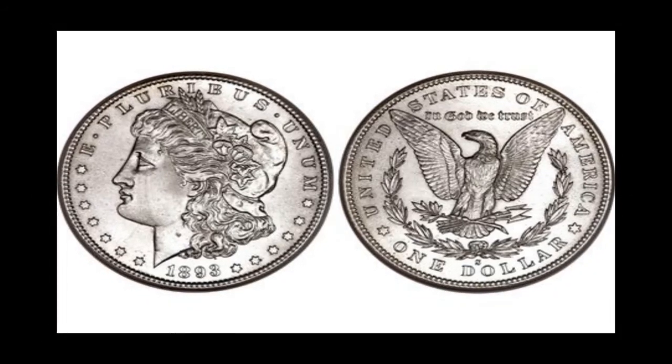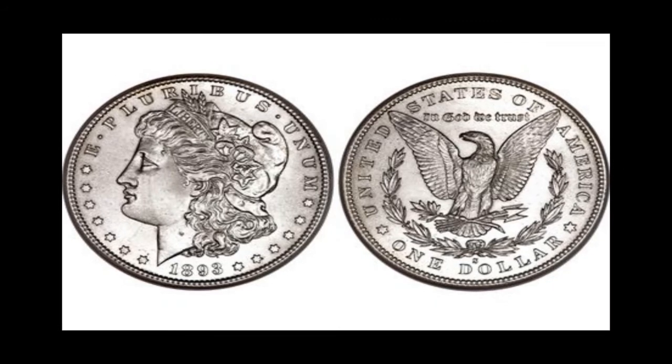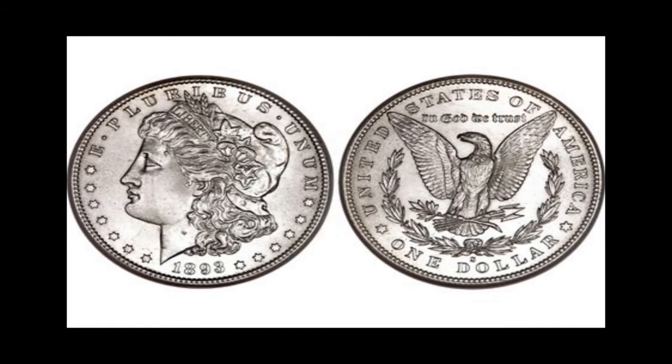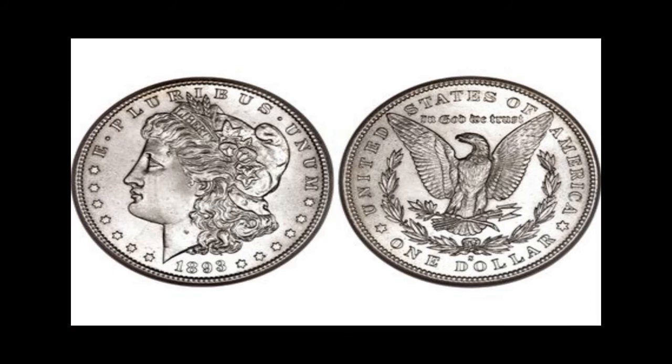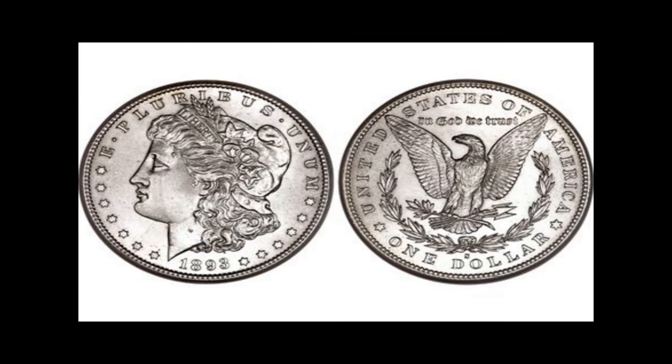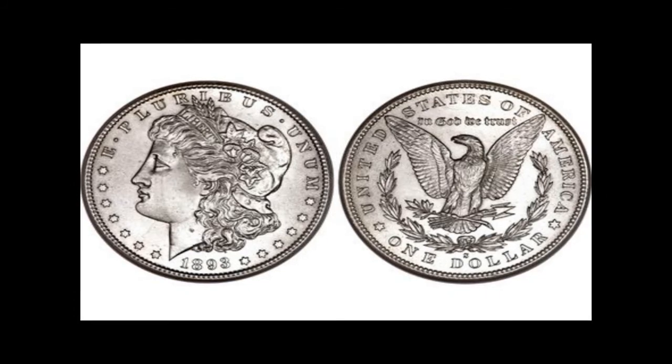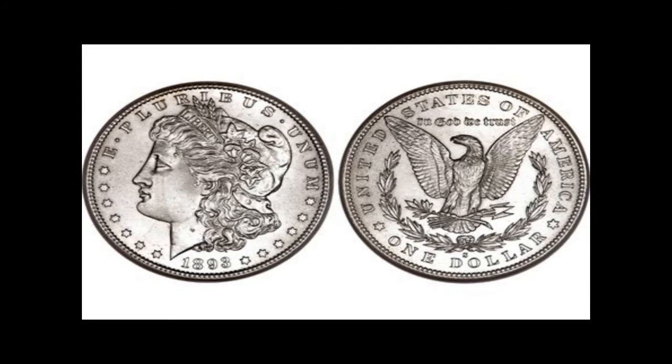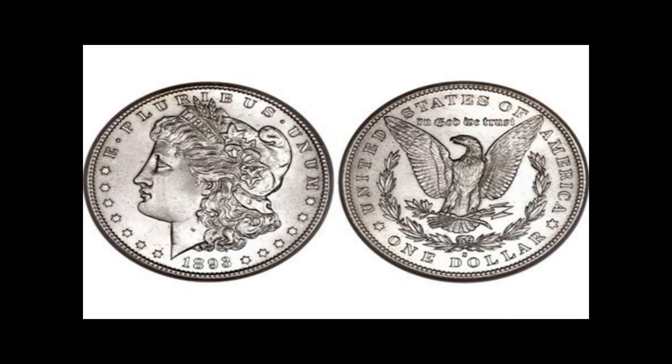Entanglement works in a very similar way, but instead imagine that the coins are always hovering in mid-air, flipping over indefinitely. Then, someone decides to come over and grab it out of the air. The other coin would stop flipping and instantly reposition itself to be the opposite of the first one.